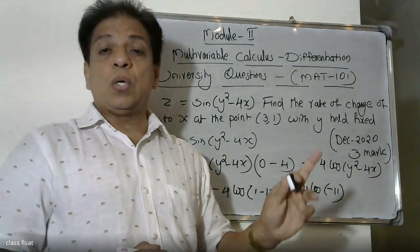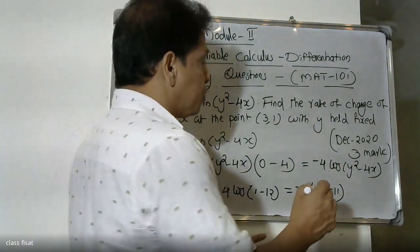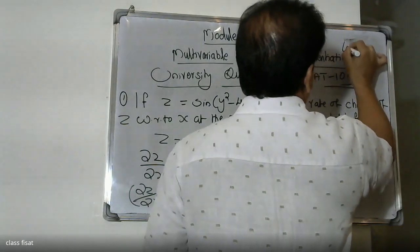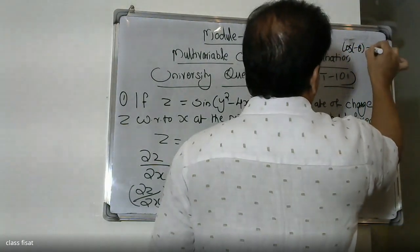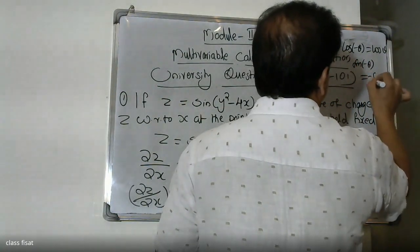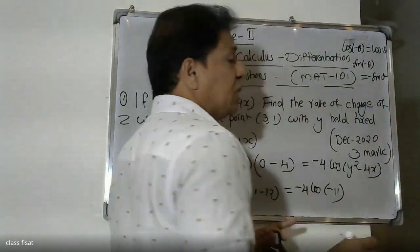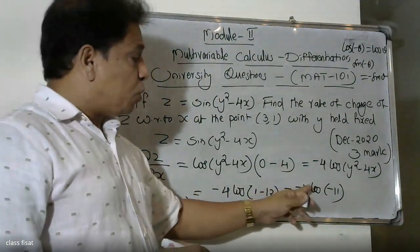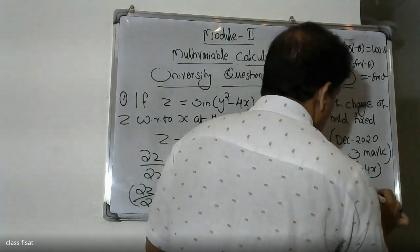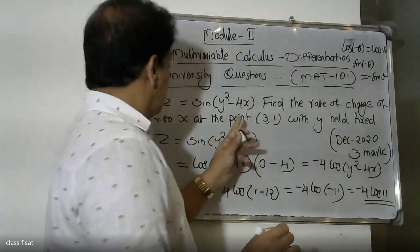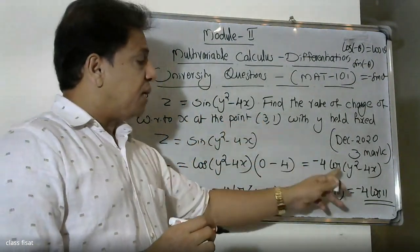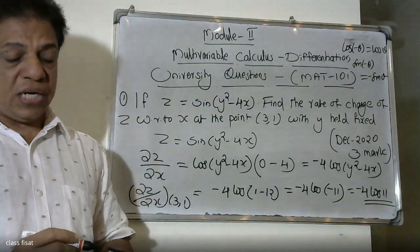Using cos(minus theta) equals cos(theta), we evaluate at the point (3, 1). Substituting, the rate of change of Z with respect to x at point (3, 1) is equal to minus 4 cos(7).